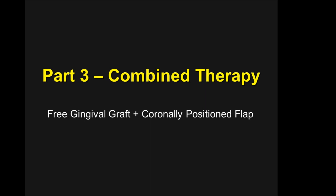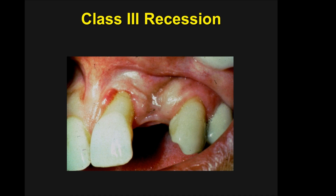Now part three: the free gingival graft plus the coronal position flap. There will be a full video on the coronal position flap in this web textbook. Originally I thought this was a Class IV recession, but the way it treated it turned out to be a Class III, because you would not anticipate any root coverage looking at it — yet we did get root coverage. The treatment plan: the central with recession was condemned, and the patient was referred to me before extraction to do a gingival graft to enhance the edentulous area where an ovate pontic could be placed for a four-unit bridge. That was the state of the art 40 years ago.